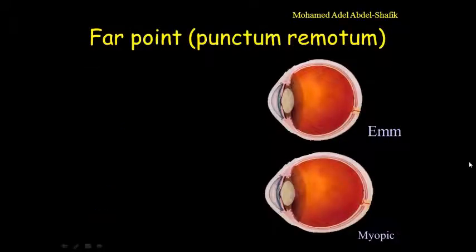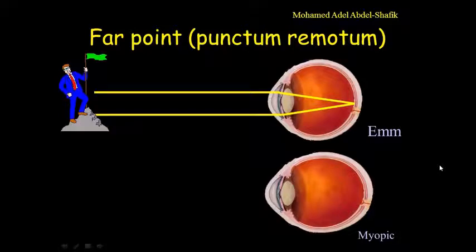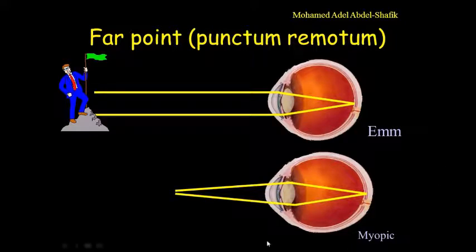Now far point and near point. In case of emmetropia, if we start from the retina, rays will come out parallel to meet at infinity. So the far point is infinity. The far point is the conjugate point with the retina when accommodation is relaxed. In case of myopia, being a stronger system, the rays will come out convergent. So they will meet here at a point nearer than infinity.